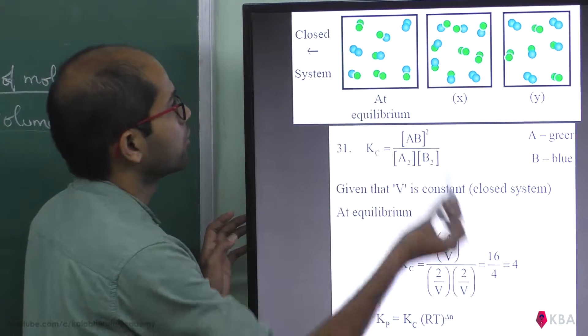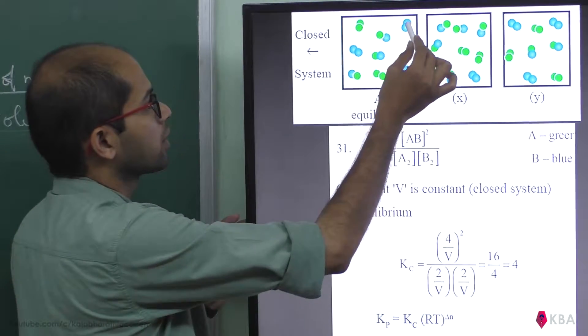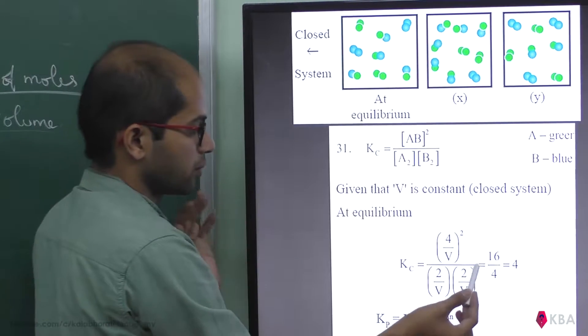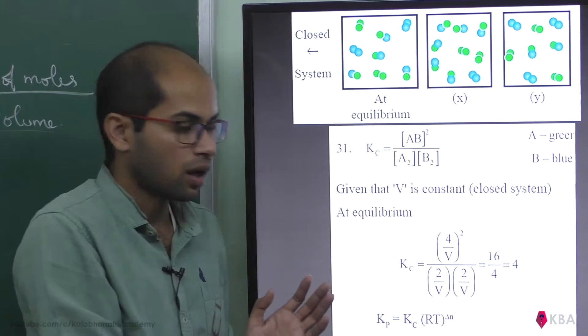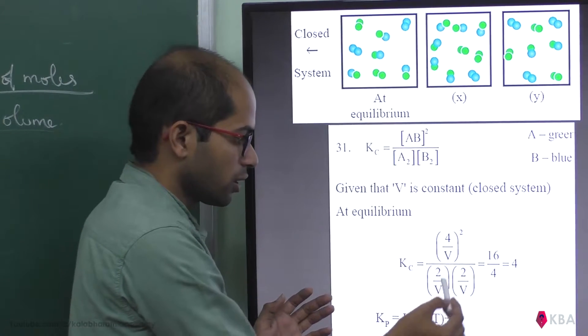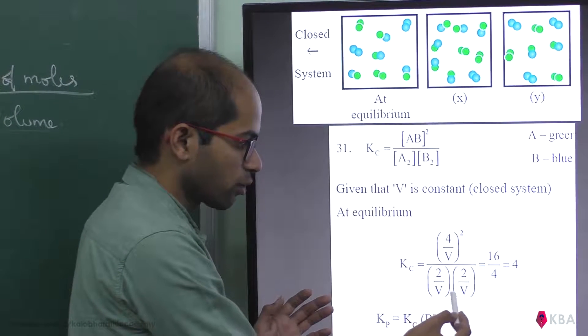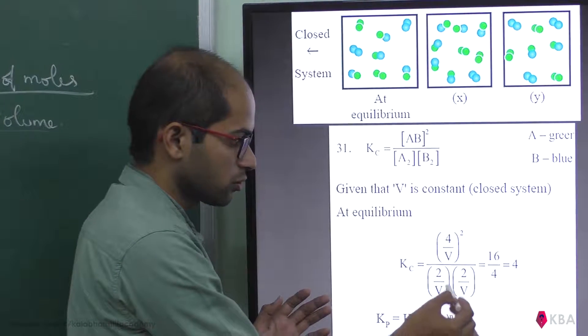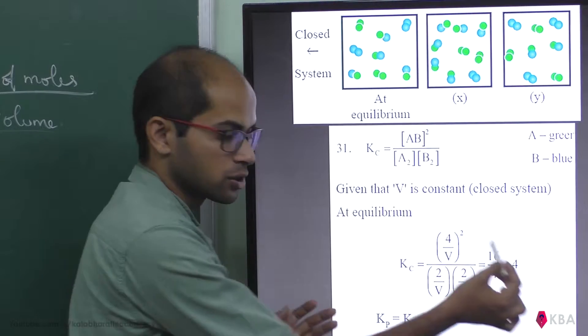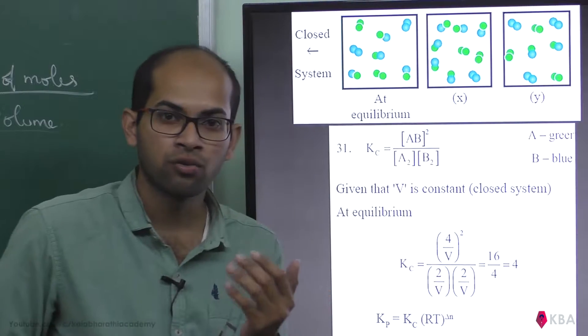So we have 2 by V for green and 2 by V for blue, giving denominator 4 by V square. The V square terms cancel. 16 divided by 4 equals 4.